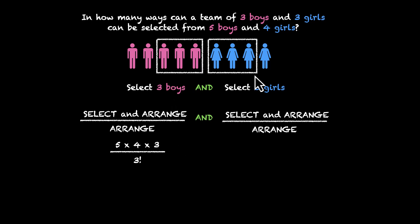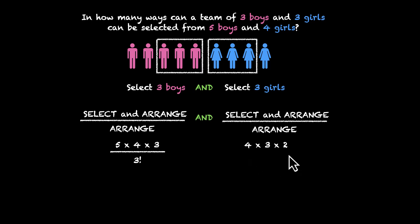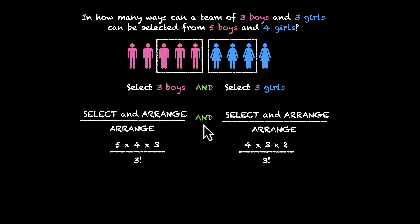We can do the same thing for the girls as well. If we select the girls in order, the first girl can be picked in four ways, the next in three, and the third in two ways: 4 × 3 × 2. But the order does not matter, so we divide by three factorial. This gives us the number of ways of selecting three girls out of four, and we multiply the two results together. Simplifying will give us the answer.